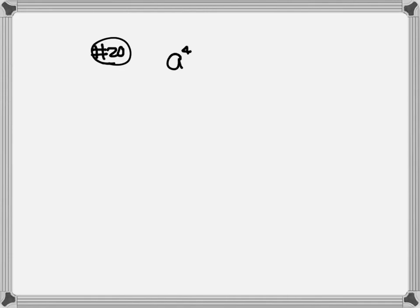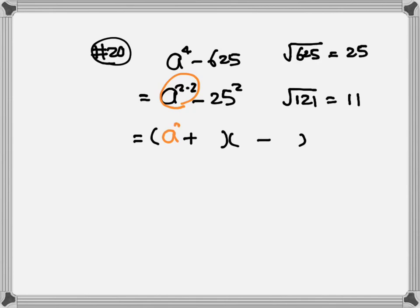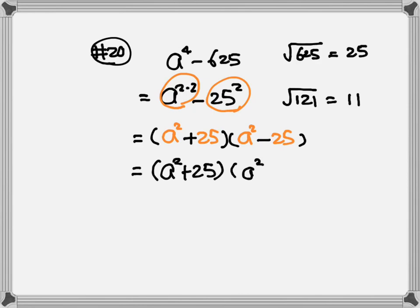Number 20: a to the fourth minus 625. Every time you see a fourth power, change it to something squared times itself. 625 is 25 squared — if you're unsure, take the square root of 625, which gives 25. Another example: square root of 121 gives 11, so it's 11 squared. We have square minus square, so draw two parentheses — one plus, one minus. Put a squared in each one, then 25 in each one.